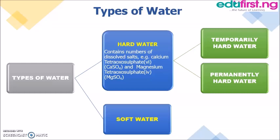Soft water is surface water that contains a low concentration of ions — in particular, it is low in calcium and magnesium. Unlike hard water, which is full of calcium sulfate and magnesium sulfate, soft water has low calcium and magnesium ion content. For example, rain water is actually one of the purest forms of water and is a typical example of soft water.